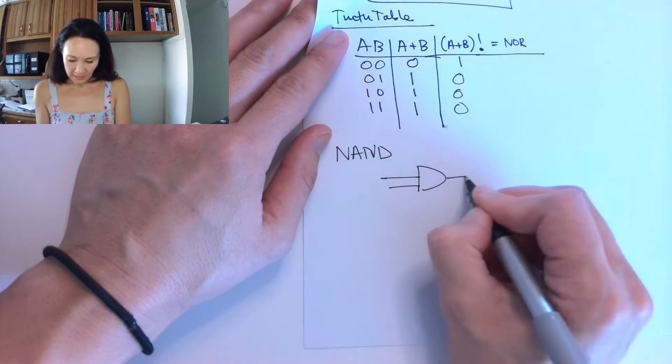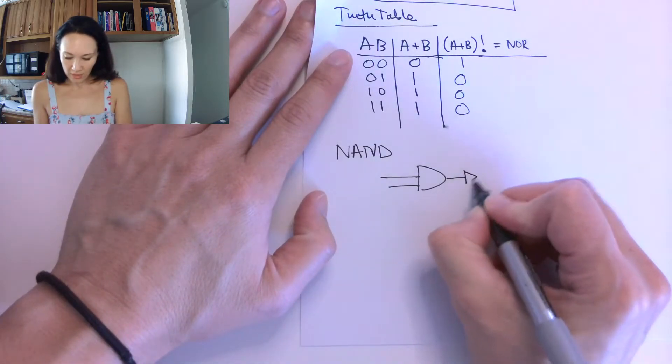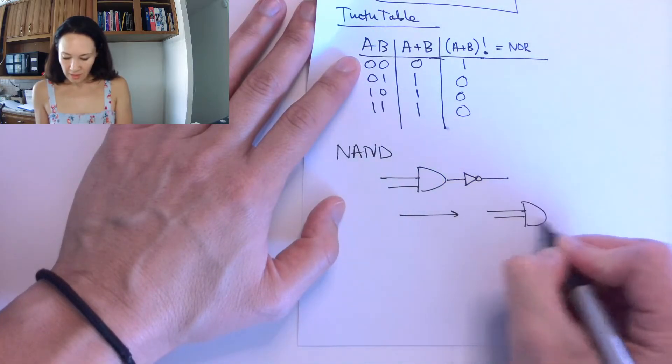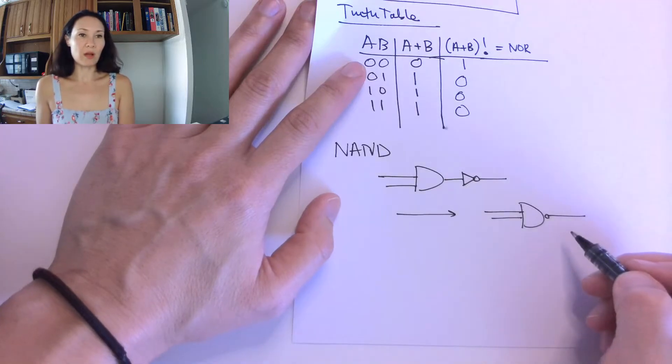If we have an AND gate, we take our output of the AND and we invert it, then this thing becomes a NAND gate. It looks just like an AND, but with a little bubble on the NAND.